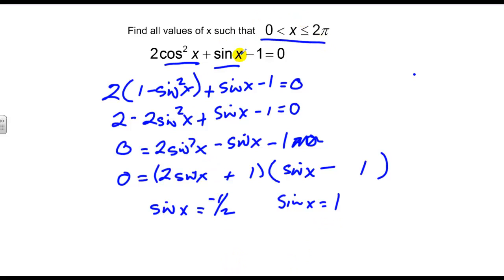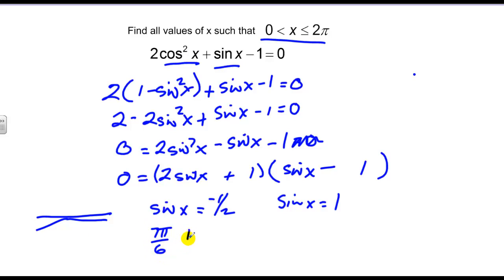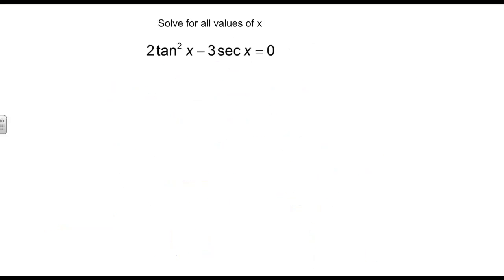This again asks for all values between zero and two pi. Where is sine of x equal to negative one half? That's in the third and fourth quadrants — in positive radians, that's seven pi over six and eleven pi over six. Where does sine equal one? That's where the y-value equals one, which only happens once: at pi over two.